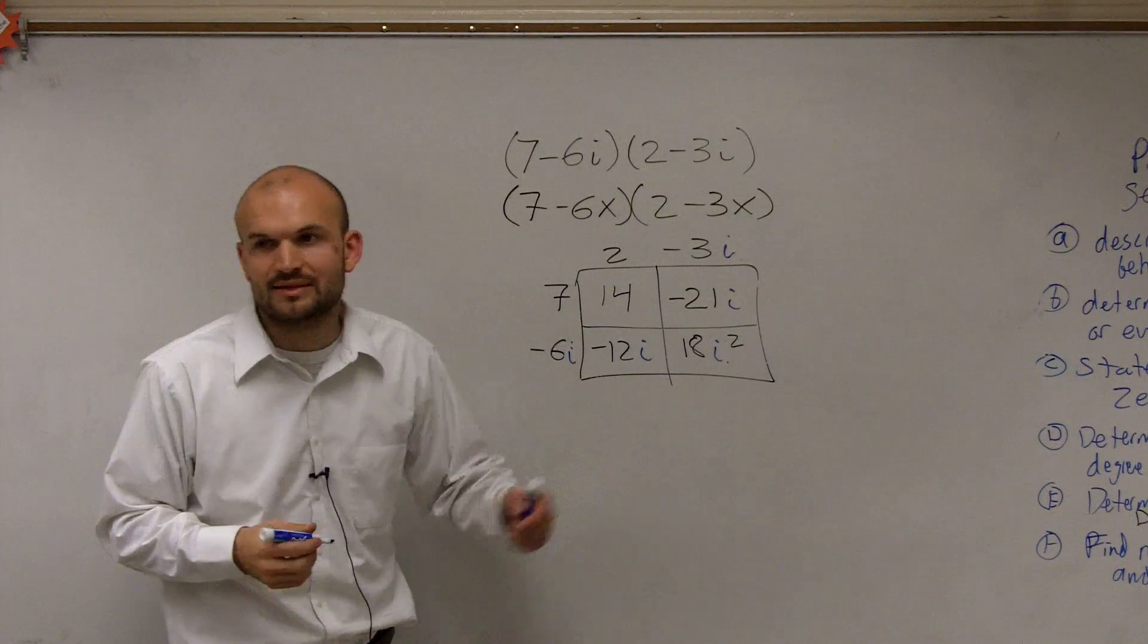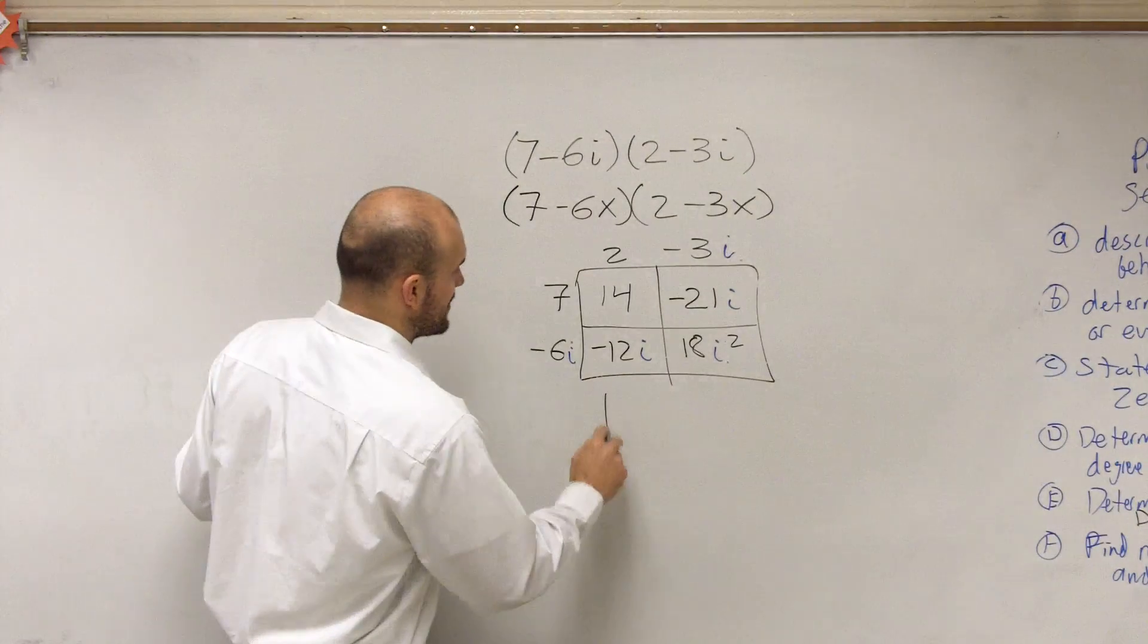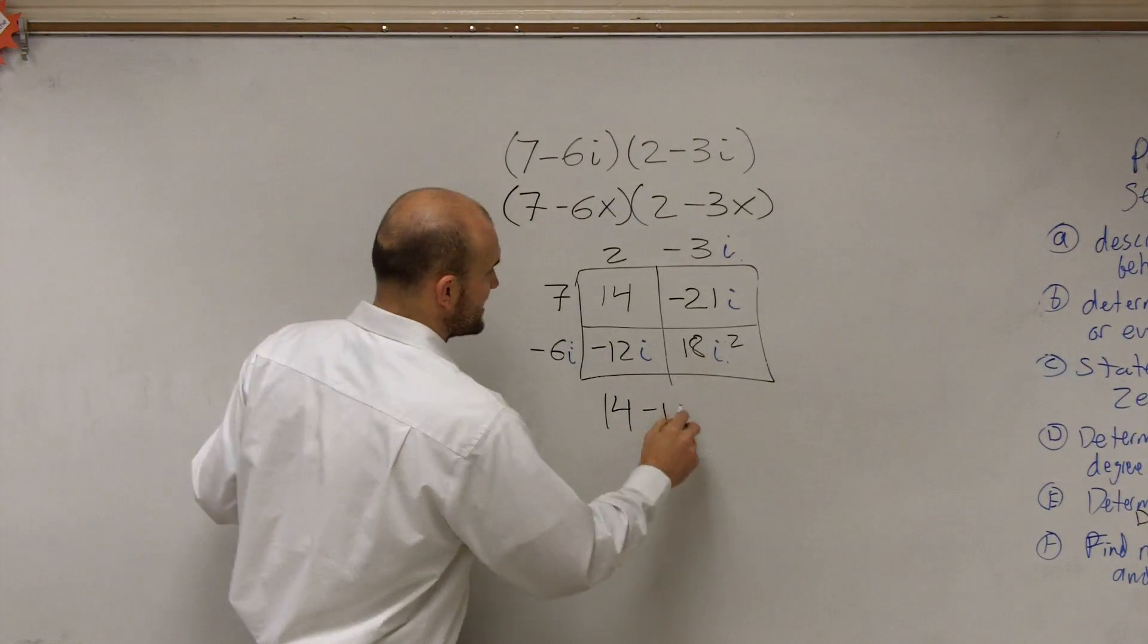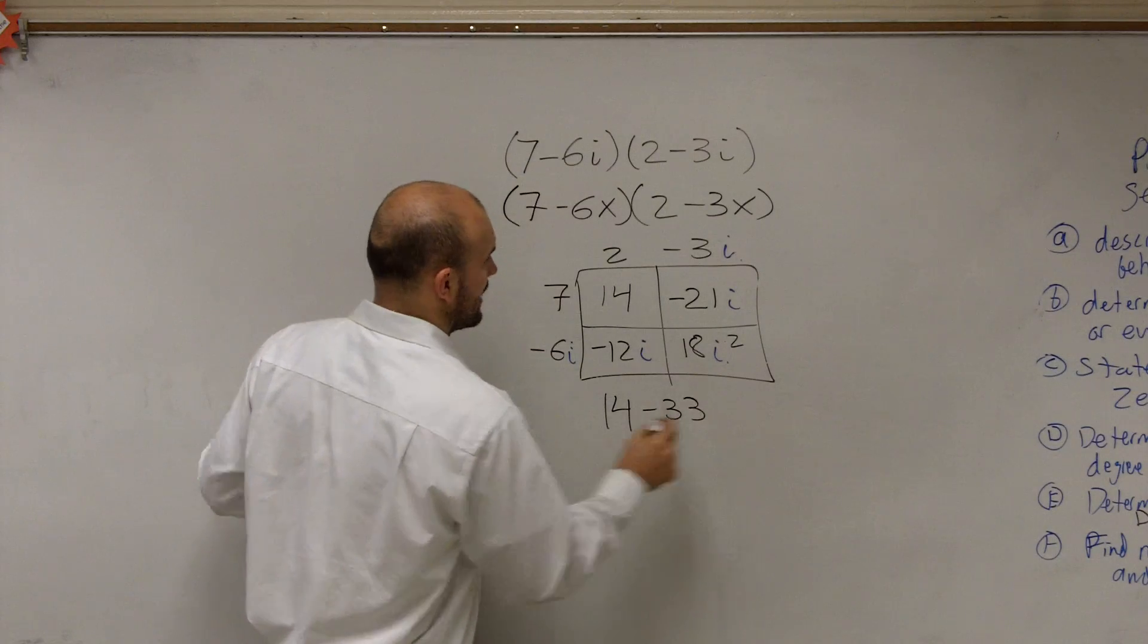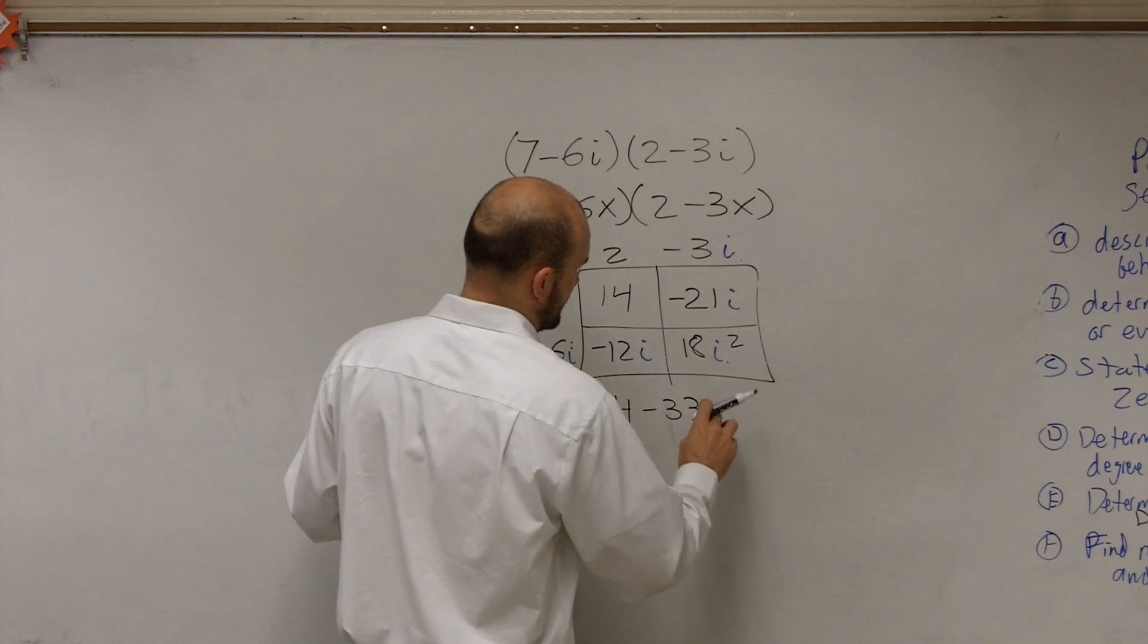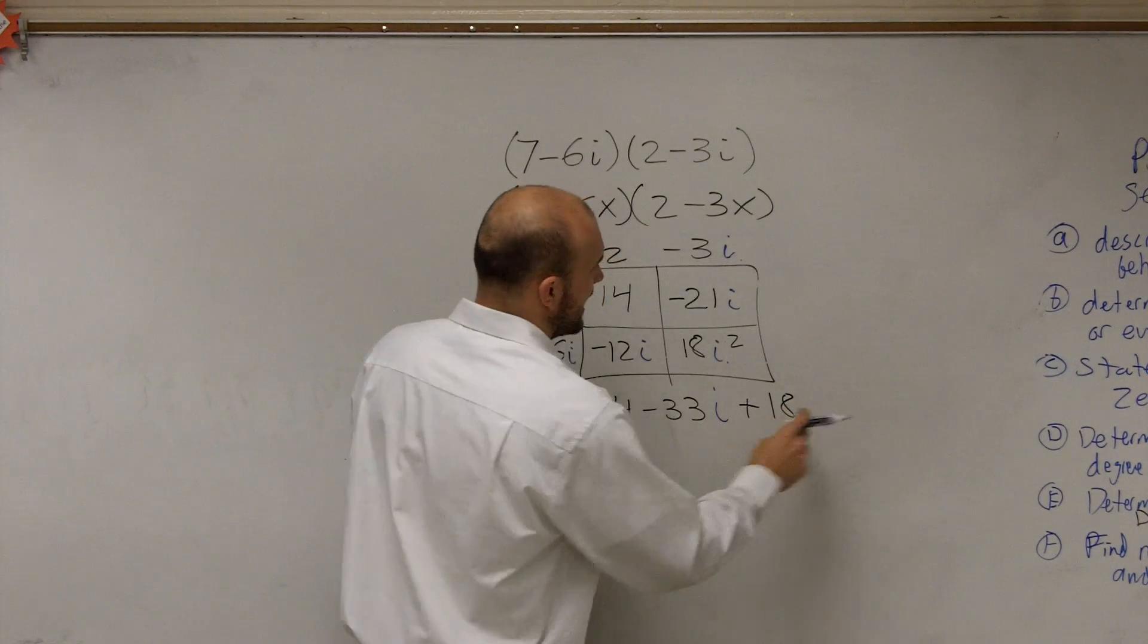So if I replace everything with the x's with the i's, you guys can see my final equation or final expression is 14 minus, this is going to be 33i, plus 18i squared.